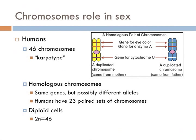In humans, we have 46 chromosomes. 23 came from your mother and 23 came from your father — unless you're a clone. The complete set of chromosomes of an organism is called its karyotype.